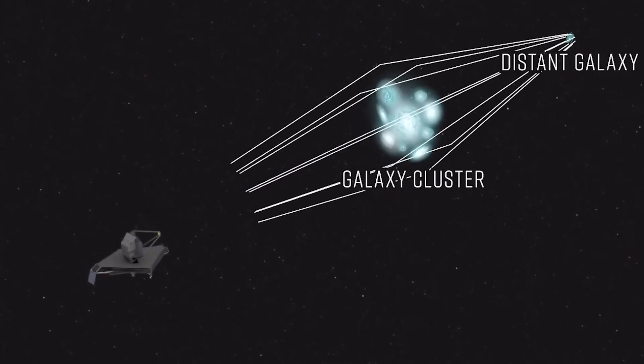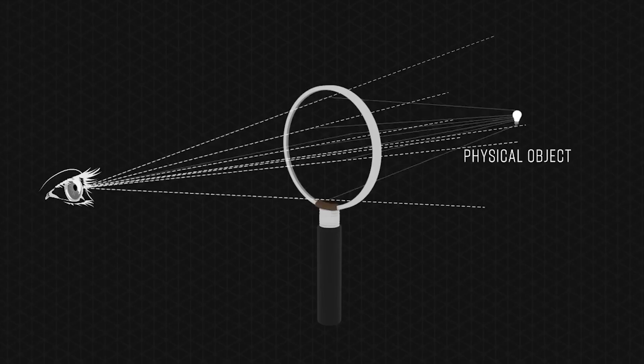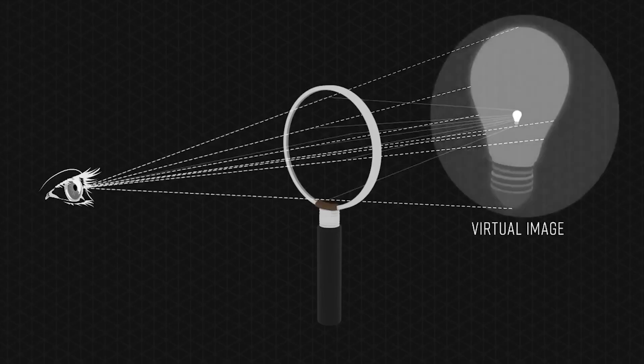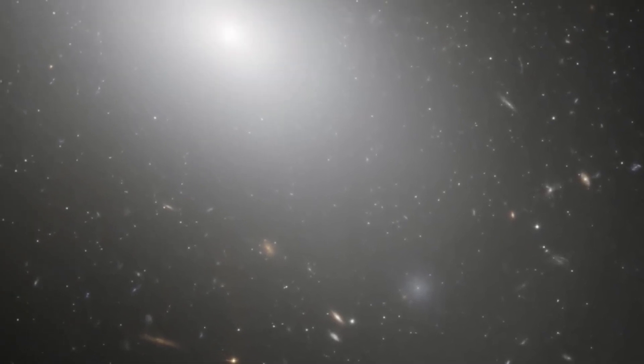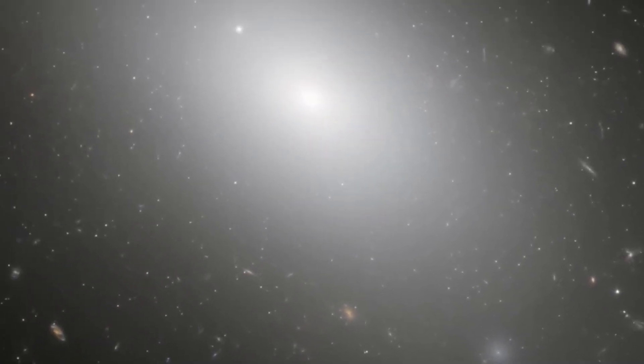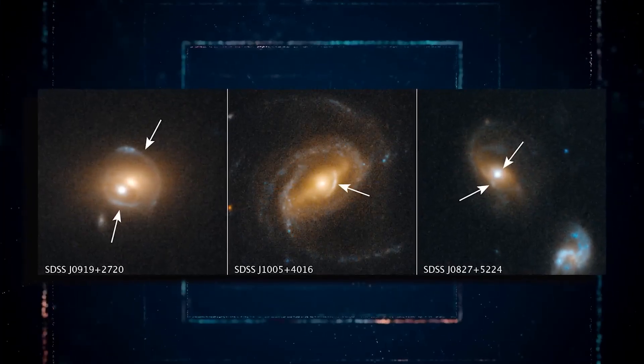Speaking of lenses, a gravitational lens can occur when a huge amount of matter creates a gravitational field that distorts and magnifies the light from distant galaxies that are behind it. These types of matter may include clusters of galaxies.